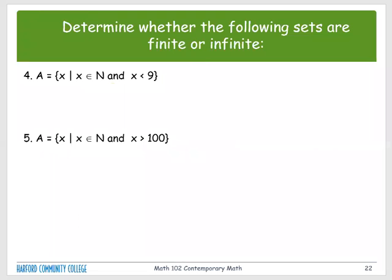It's about finite and infinite sets. Number four: set A is the set of x such that x is a member of the natural numbers, and x is less than nine.